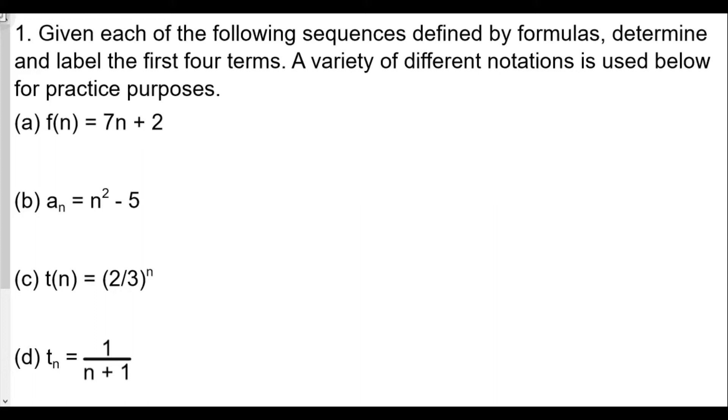The first one is f(n) = 7n + 2. The first term we're going to use is f(1). Just like any function, we plug in the value for n, so we have 7 times 1 plus 2, which equals 9. So f(1) equals 9. f(2) would be 7 times 2 plus 2, which is 14 plus 2, which is 16.